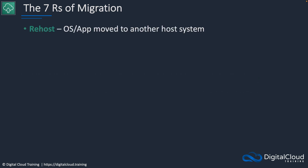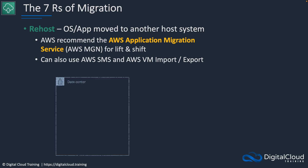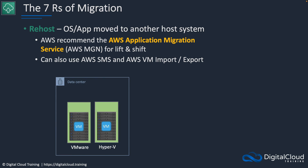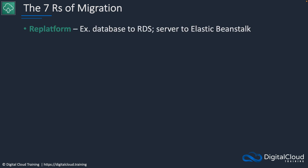If we re-host, your OS and app is moved to another host system. For this, AWS recommends the Application Migration Service, also known as AWS MGN. You can also use the SMS service (Server Migration Service) or AWS VM Import/Export. You have your data center with VMware or Hyper-V virtual machines, and you install the replication agent — for VMware there's also a vCenter agentless replication so you can integrate directly into vCenter. Those systems are then migrated via the migration service into EC2 instances, and you have a test and cut-over option so you can synchronize the systems ahead of time and cut them over when ready.